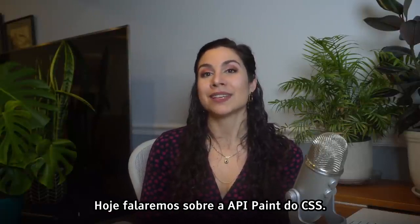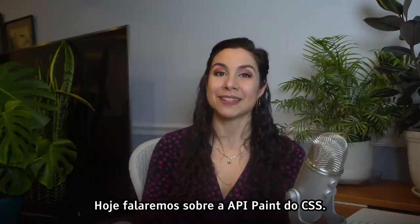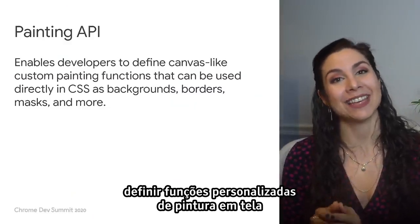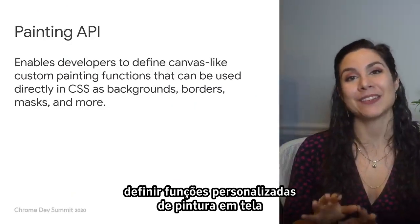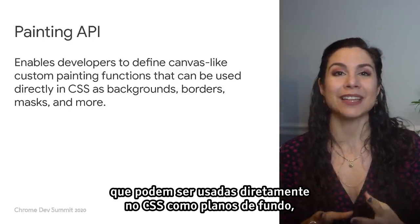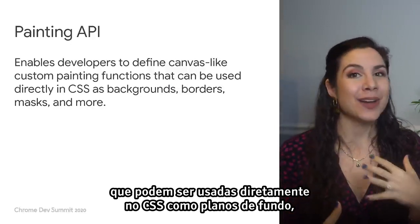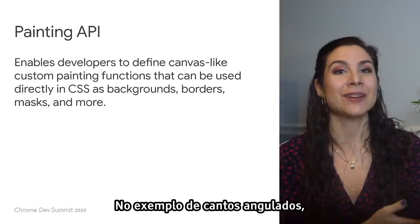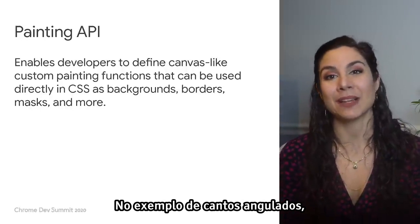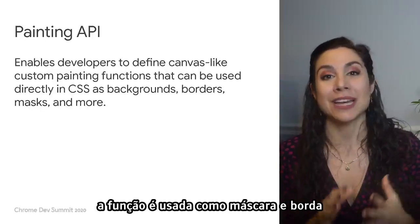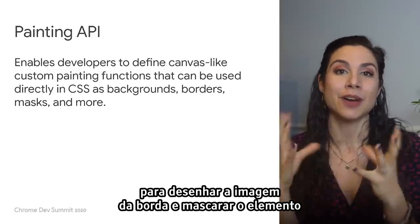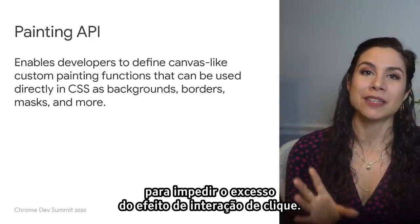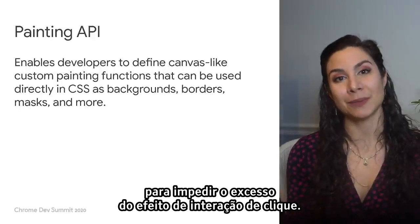So let's focus on the CSS Paint API today. This API enables developers to define canvas-like custom painting functions that can be used directly in CSS as backgrounds, borders, masks, and more. In the angled corners example I just showed, it's being used as both a mask and a border to draw the border as a border image and mask the element to prevent click interaction effect overflow.